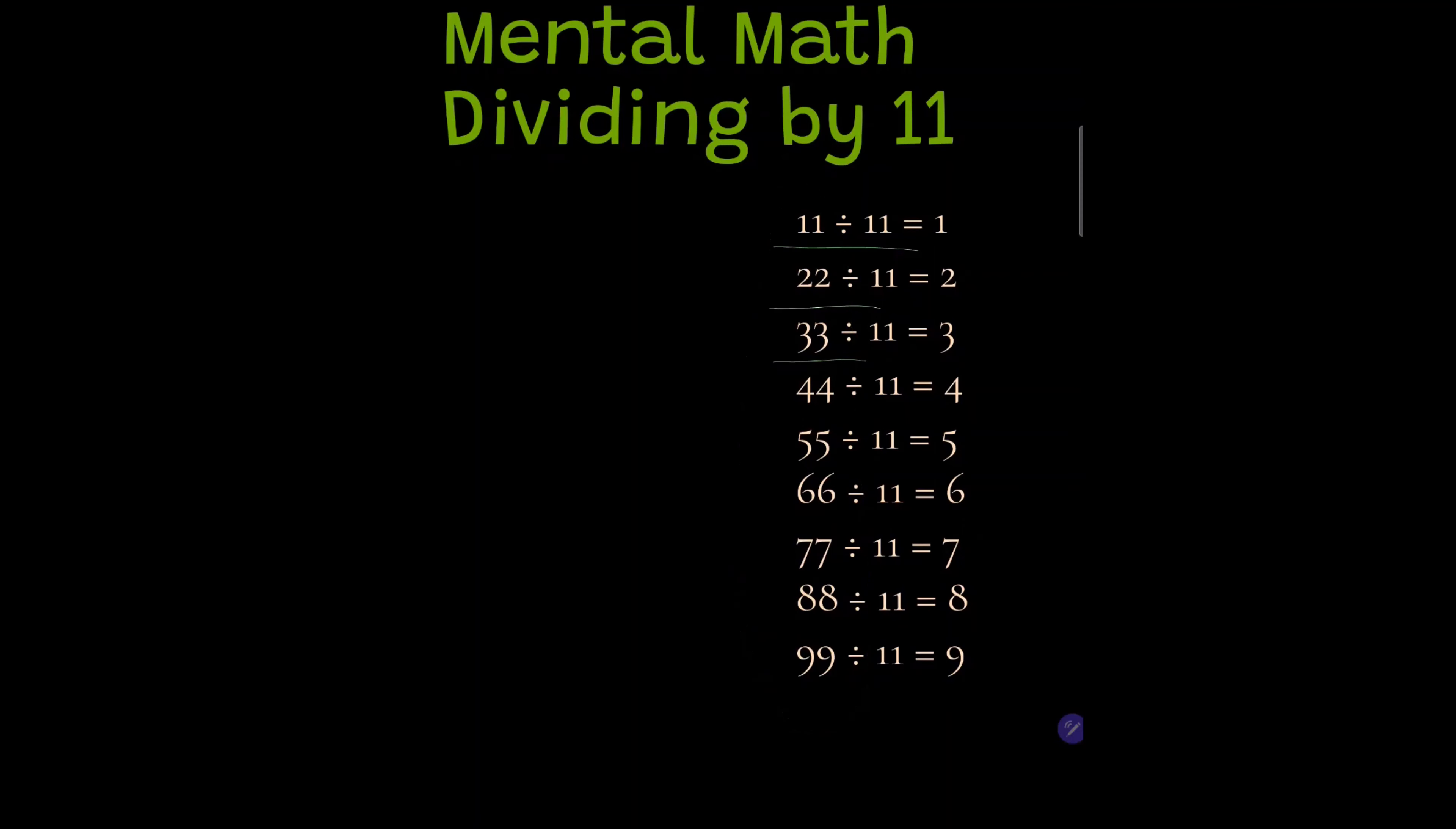But what if the number doesn't divide equally by 11? For example, say I give you 35 divided by 11. How do we do this mentally without using a calculator?